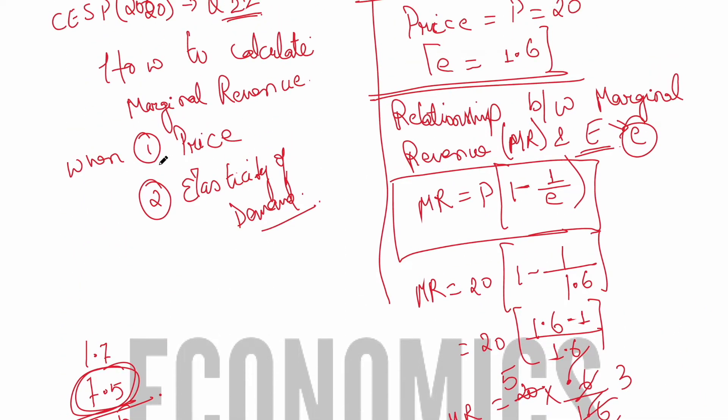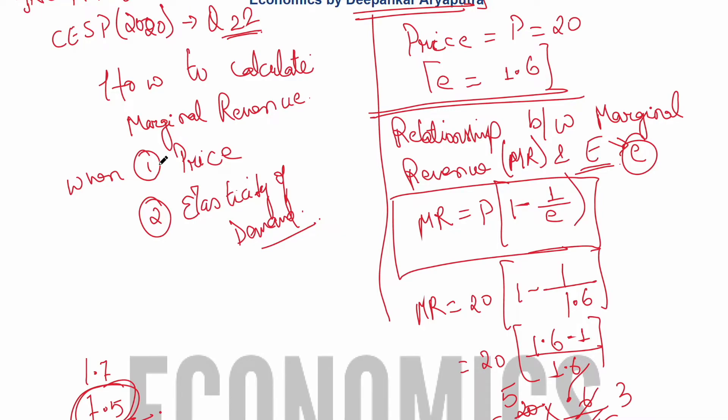And you can find this relationship in any of the standard microeconomics book. And if you are preparing for microeconomics, then I think Hal Varian is sufficient.